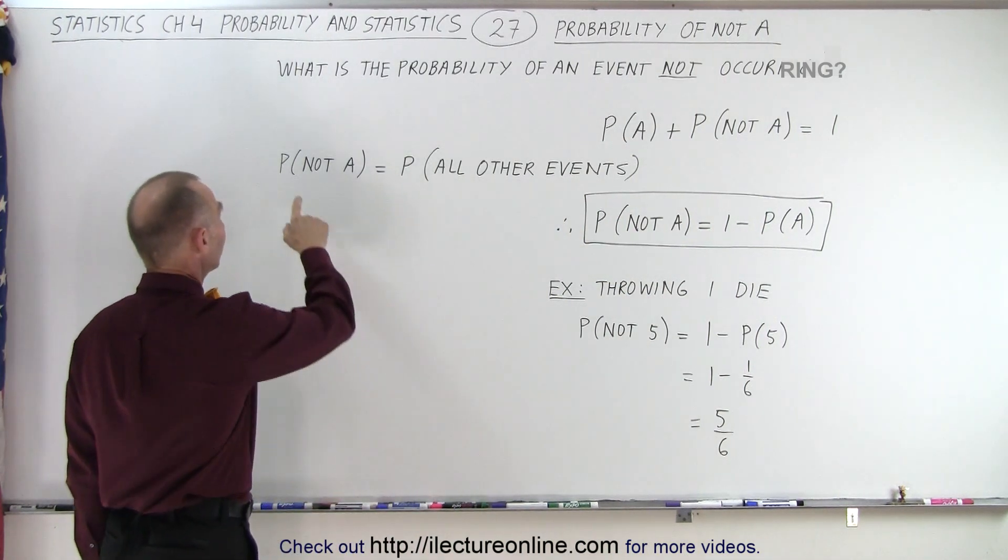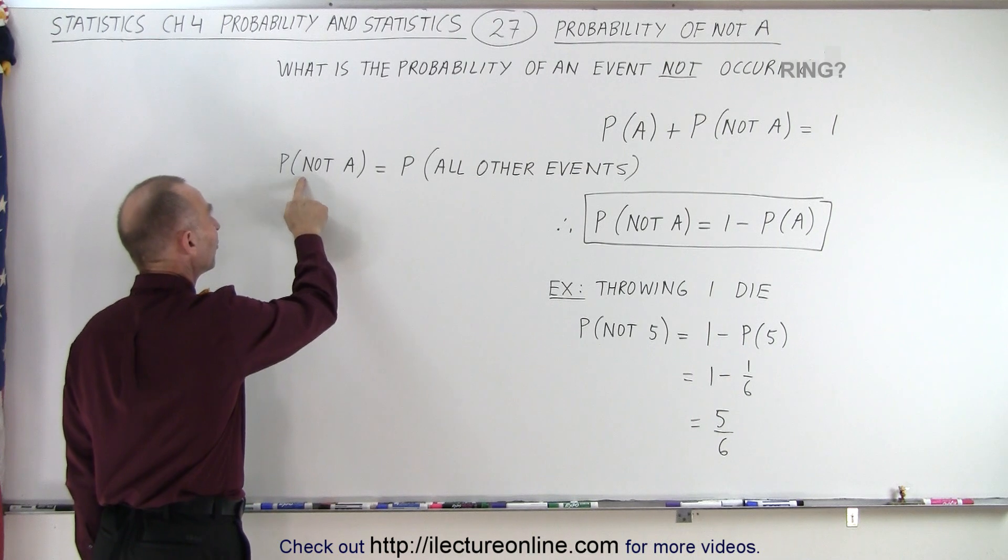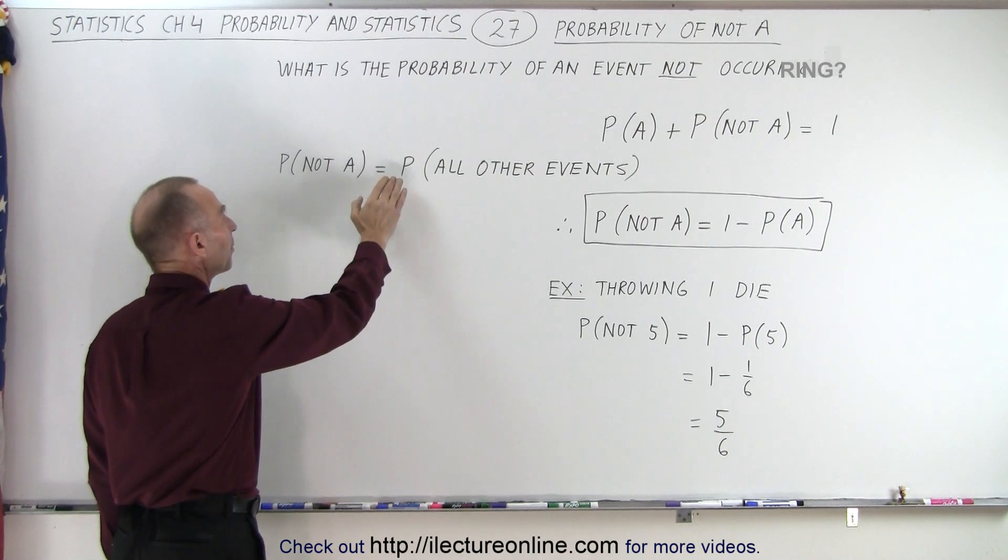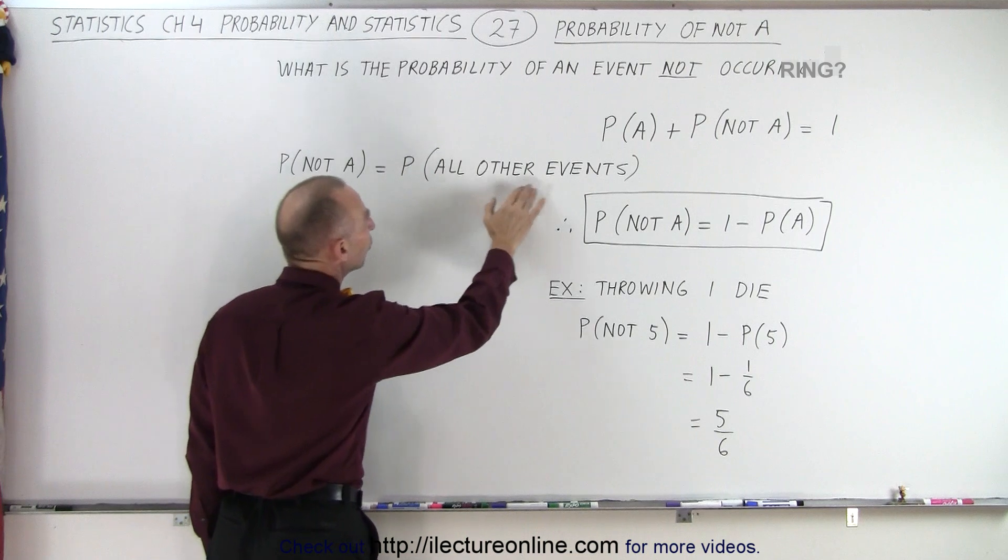And so, in other words, when we see something like this, the probability of not A, what we're really saying is, what is the probability of all other events occurring?